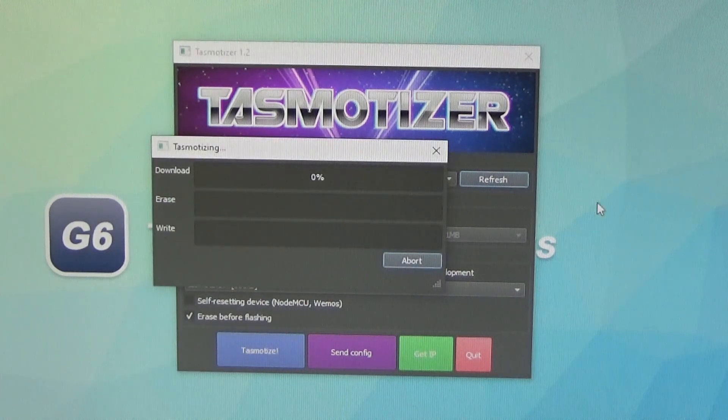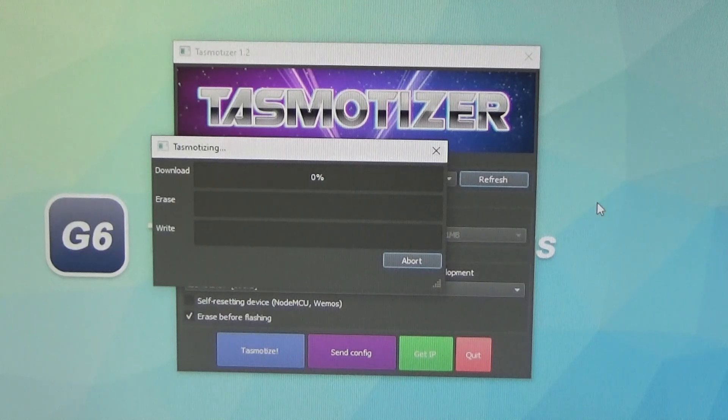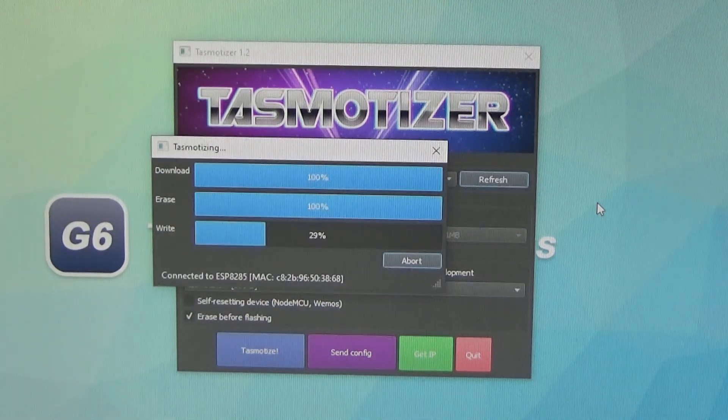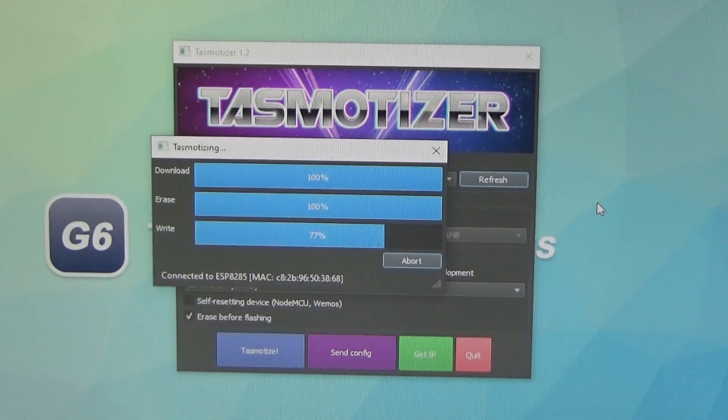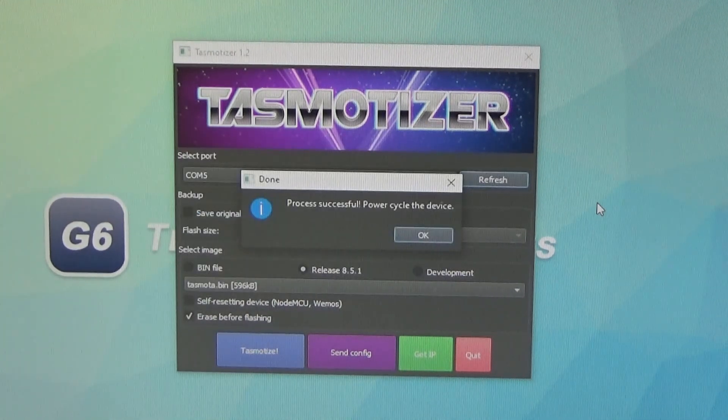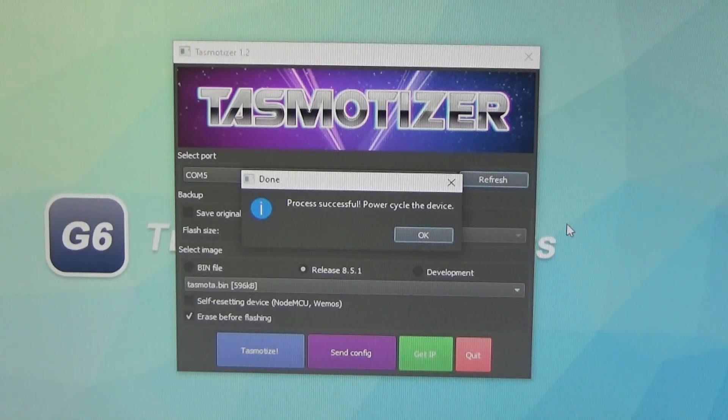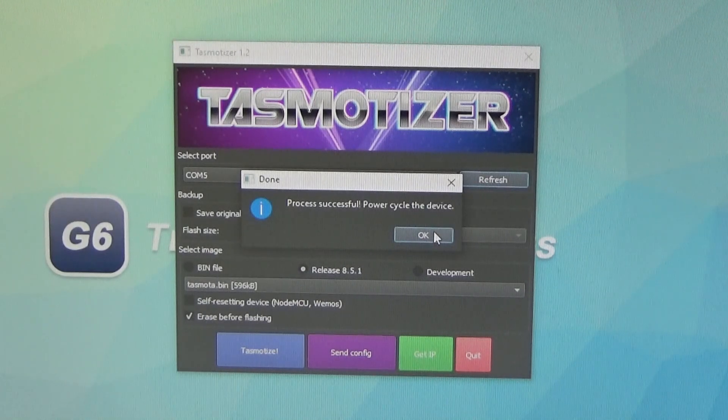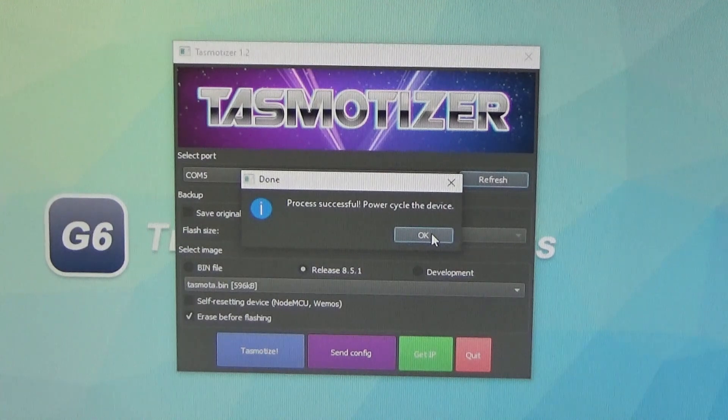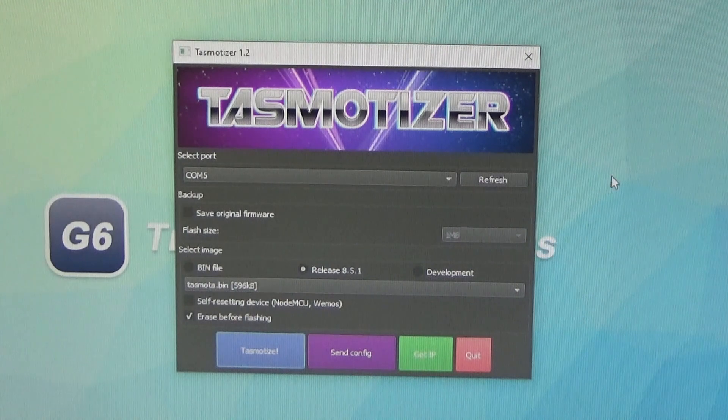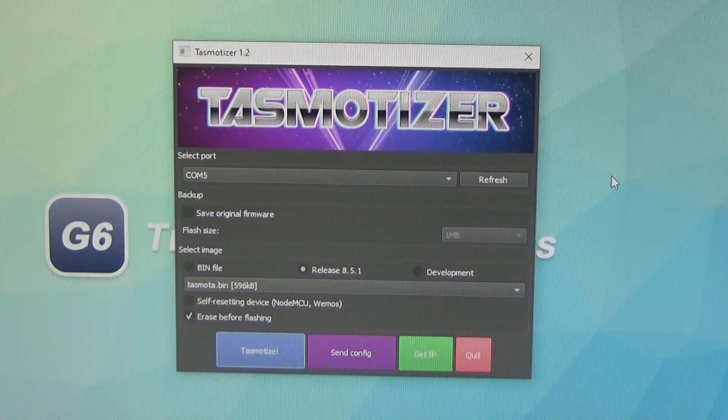It's going to make its connection with the device after it downloads the firmware. And then from here, we just wait a minute and let it do its thing. Now it's saying that the process was successful and it wants us to power cycle the device. So we'll go ahead and click OK. And then we're going to unplug our serial to USB adapter and plug it back in to power cycle the device.